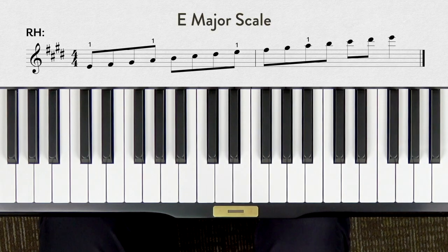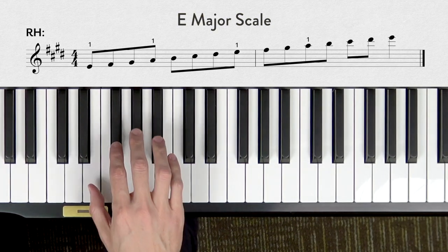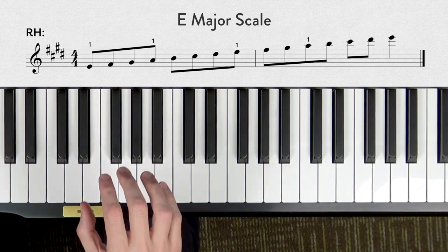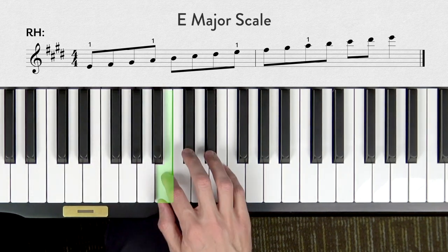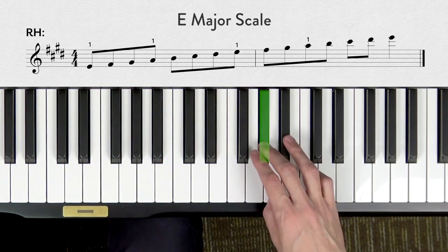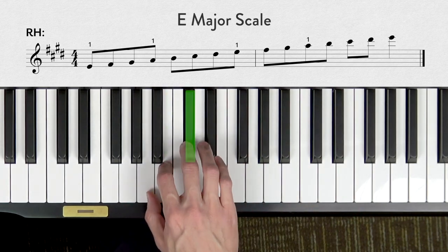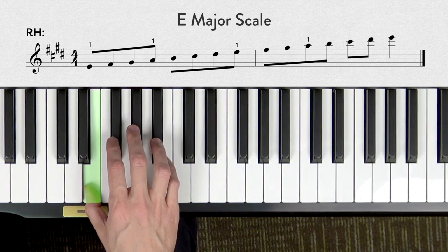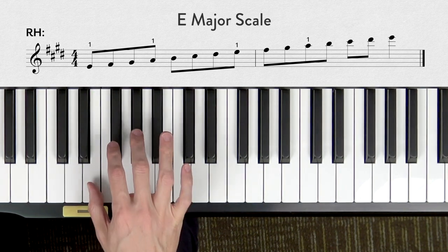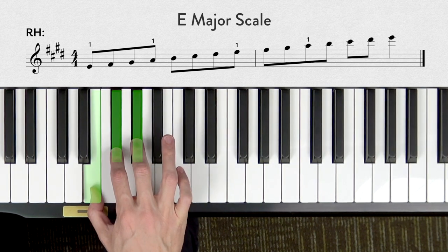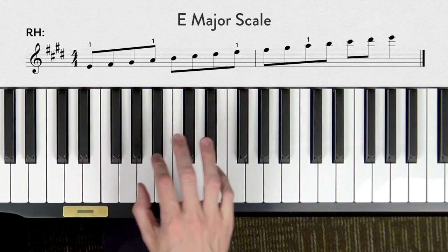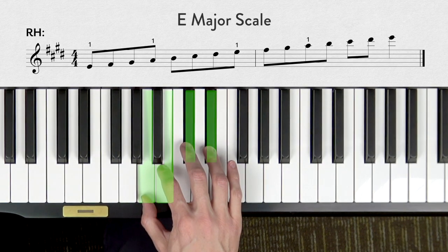Now our E major scale happens to use our basic fingering, which you'll recall for the right hand is 1 2 3 1 2 3 4 1 2 3 1 2 3 4 5, and then the same fingering coming down. So let's practice this in groups. Okay, take your right hand and just play these as a group. 1 2 3, then 1 2 3 4. Try this with me.